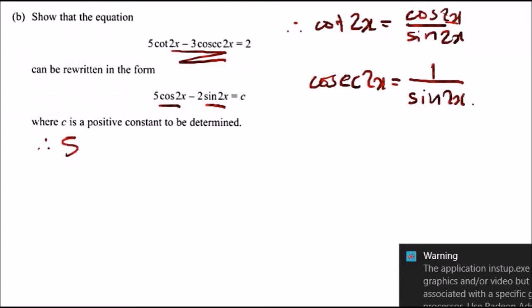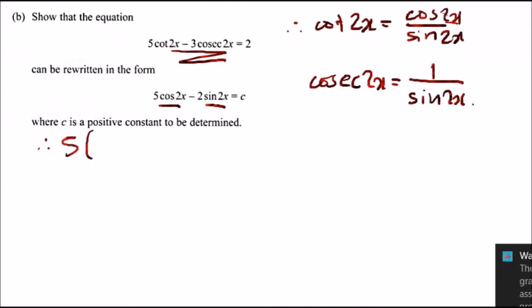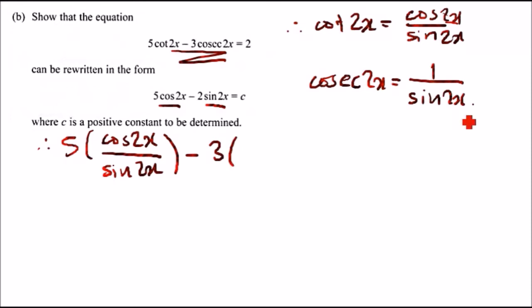we should get five times cot 2x, which is the same as cos 2x over sine 2x, minus three times cosec, which is 1 over sine 2x, equals 2.